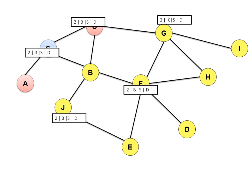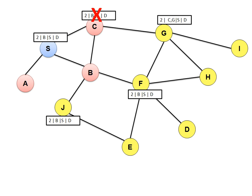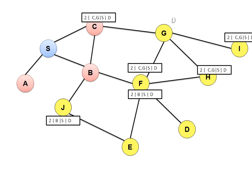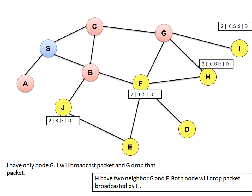Node B broadcasts the packet; it is received by J, F, S, and C. Nodes S and C drop this packet because they have already broadcasted it — they check the unique ID and have saved it in their buffer. For node G: G mentions its address in the packet and sends it to all its neighbors. If a neighbor already has a copy or has already broadcasted that packet in the past, they drop it; otherwise they keep it.